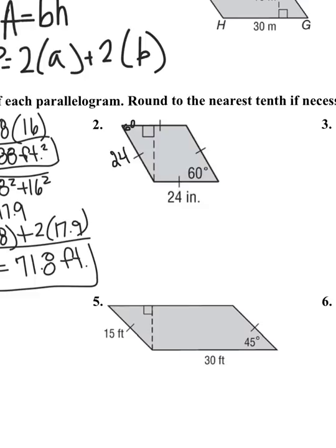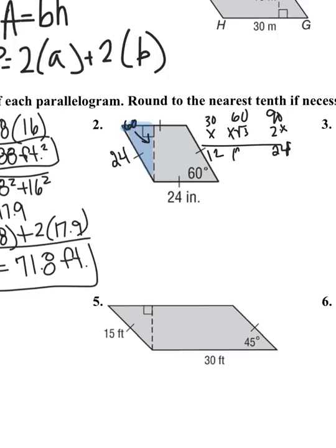I have a 30-60-90 triangle, focusing on the triangle on the side. The ratios for a 30-60-90 are x, x√3, and 2x. Across from the right angle is 24, so 2x equals 24, meaning x equals 12. Across from the 60 is 12√3, and I'll leave that as a radical until the final answer. So the height of this shape is 12√3.